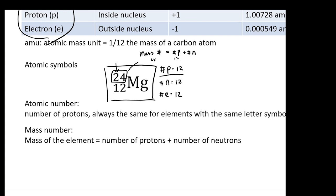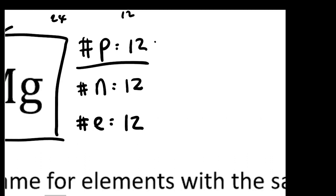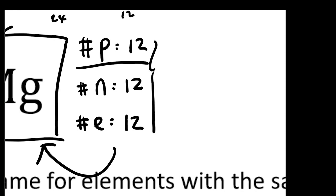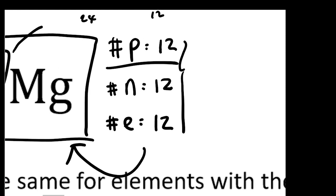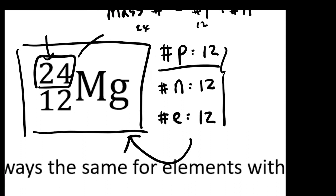Another type of question is the opposite: if I tell you the number of protons, neutrons, and electrons, can you give me the proper atomic symbol? There are just two sides — one is going from an atomic symbol to figure out the number of protons, neutrons, and electrons; the other is turning it around, where I give you all those numbers and you work back to the atomic symbol.